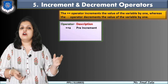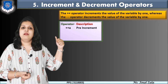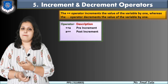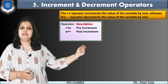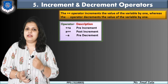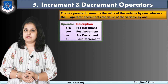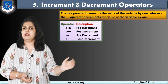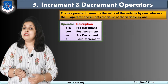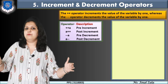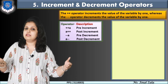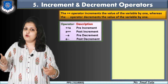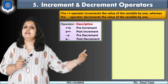The first type is pre-increment. 'Pre' means prior, so the operator is written before the operand — ++A is pre-increment. The second type is post-increment, where the operand comes first and the operator comes after — A++ is post-increment. Similarly, --A is pre-decrement and A-- is post-decrement.